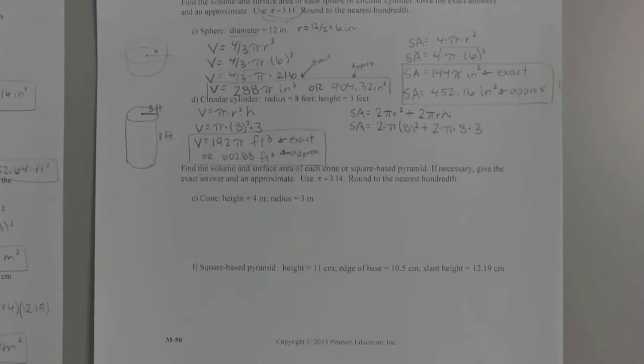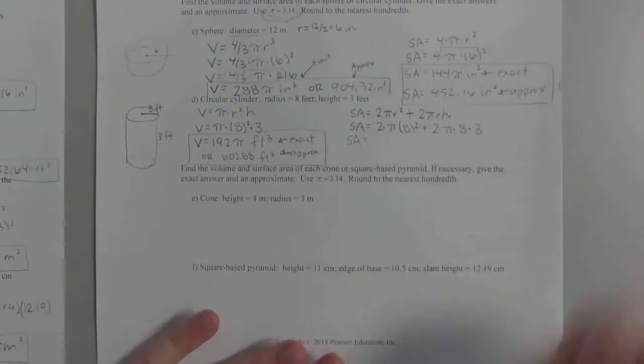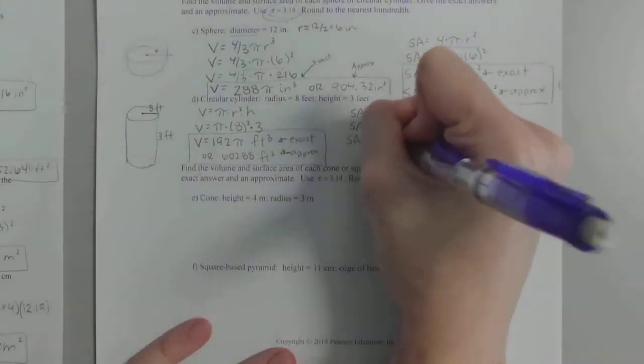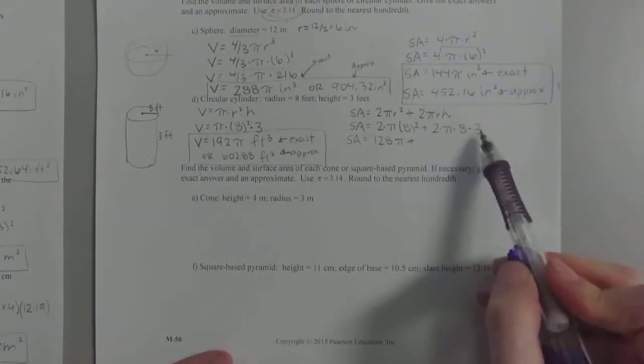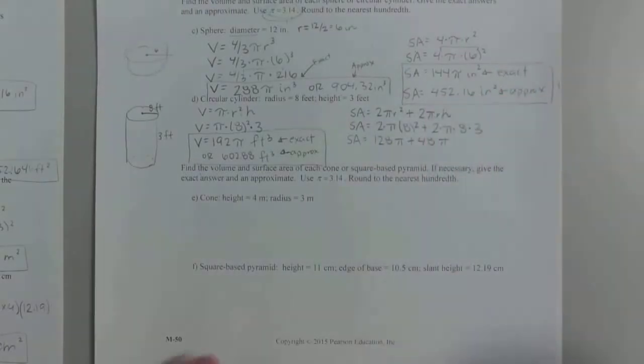All right. Leave pi alone. But you can take 2 times 8 squared. And you can take 2 times 8 times 3. So leave the pis where they are. So this will be, I'm trying to think, 8 squared, guys, that's 64 times 2 would be 128 pi. Plus 2 times 3 is 6, 6 times 8 is 48. So you get 48 pi. Is that okay so far? You guys see what I did? But this is what's really weird.